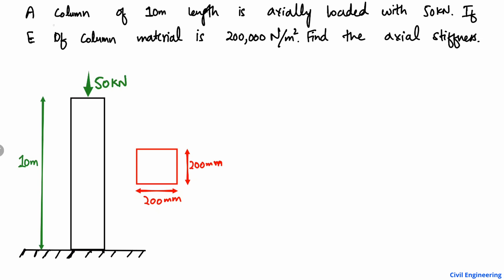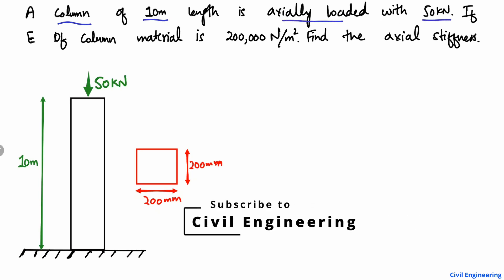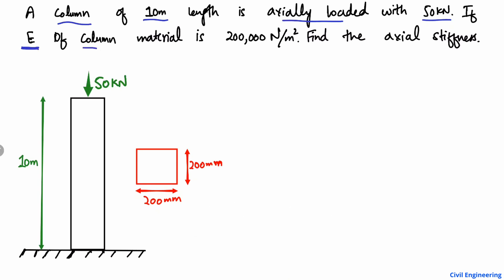The problem states that a column of 10 meter length is axially loaded with a 50 kilonewton load, and the elasticity E of the column material is 200,000 newton per square millimeter. Find the axial stiffness for this column. The load acting is 50 kilonewton, the length is 10 meters, and the cross section is 200mm × 200mm — a square cross section.